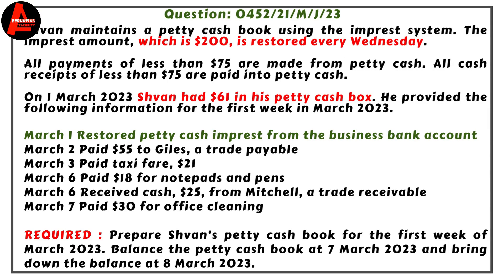Now before we start writing, let us look at the question. Shabon maintains a petty cash book using the imprest system. The imprest amount is $200, restored after Wednesday. All payments of less than $75 are made from the petty cash book, and all cash receipts less than $75 are paid into petty cash. On 1st March 2023, Shabon had $61 in his petty cash box. He provided the following information for the first week in March 2023.